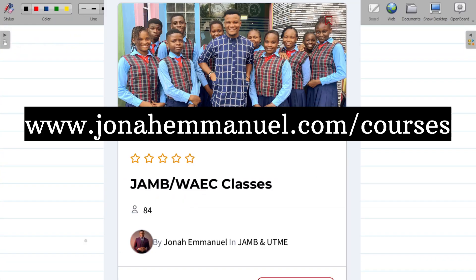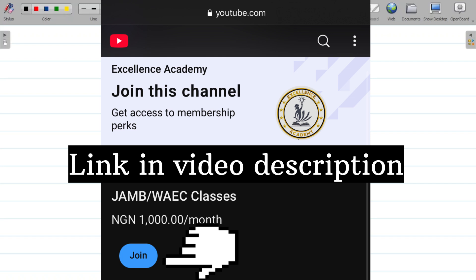Don't forget that I've prepared over 100 classes on physics, chemistry, mathematics, and other science subjects. You can get it on my website, www.journalimmanuel.com/courses. You'll see the JAMB/WAEC classes. It gives you access to over 100 classes on physics, chemistry, mathematics, JAMB past questions and solutions for over 10 years. You can also get it by joining my channel membership. I'll leave a link to join the channel membership in the video description.